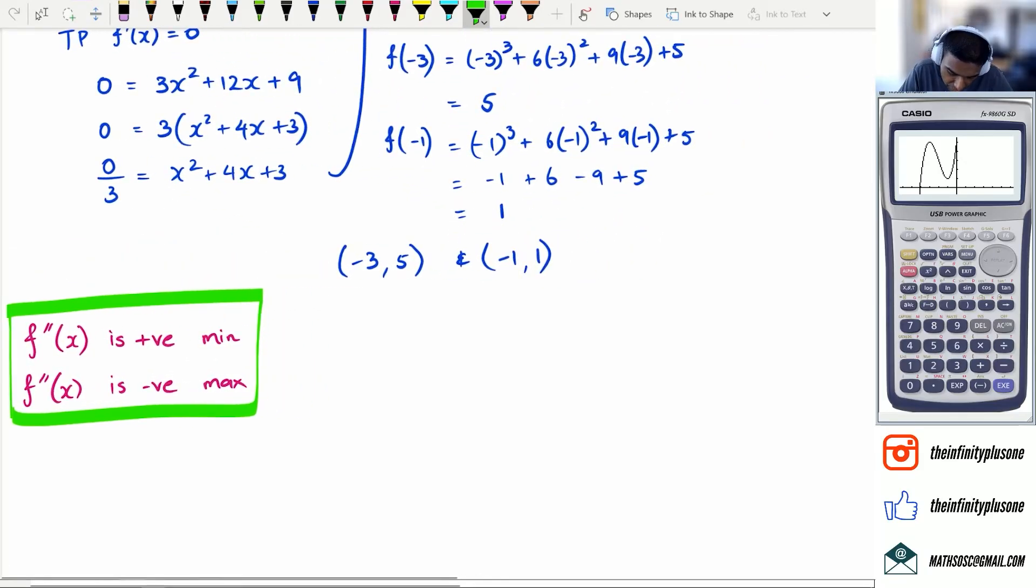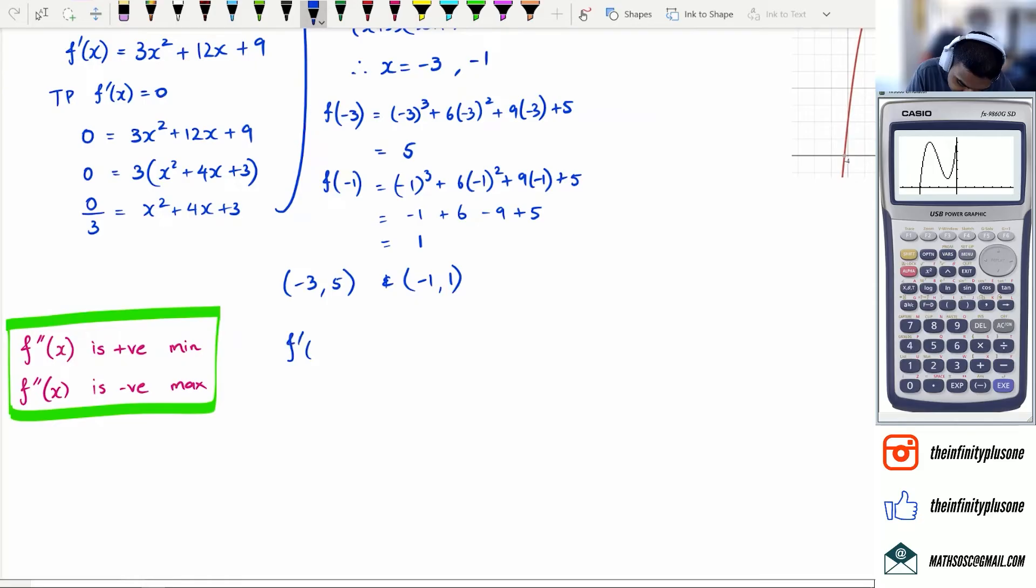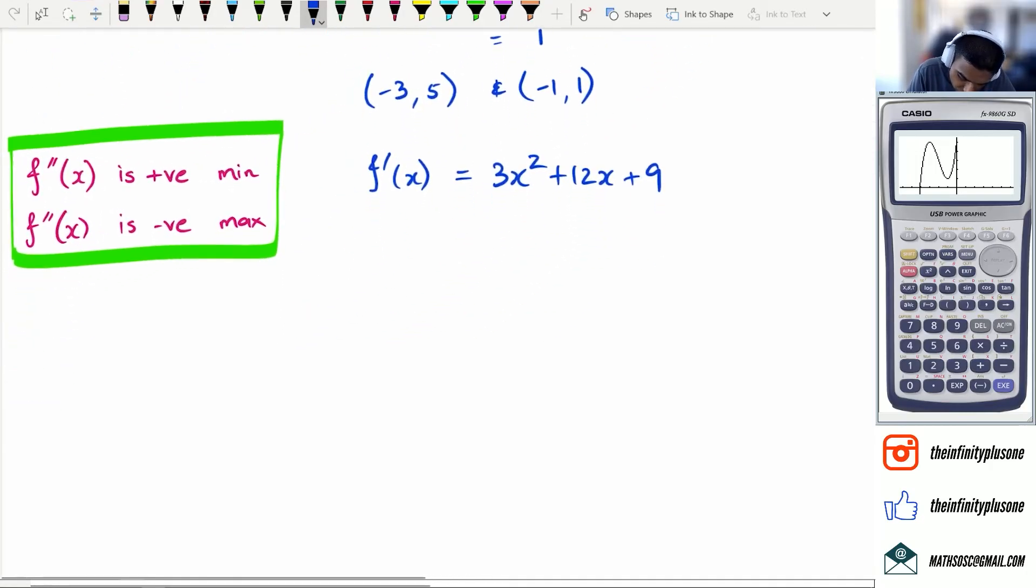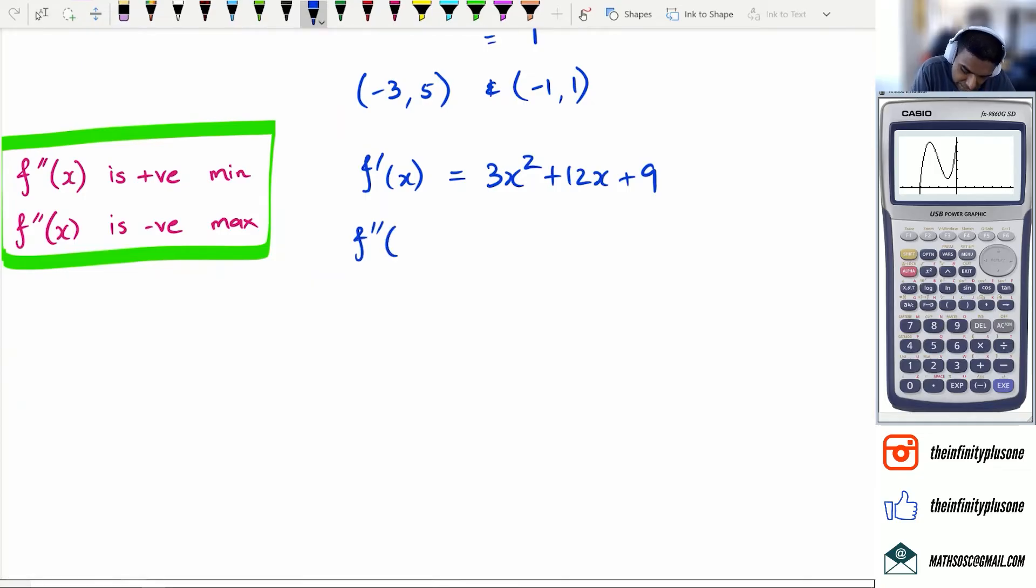So how do we figure out f''(x)? Well, we already know what f'(x) is. Now, f'(x) equals 3x squared plus 12x plus 9. So what we need to do is work out f''(x), which basically just means differentiate it a second time. So when we differentiate this a second time, we're going to end up with 6x plus 12. So at this point, all you have to do is substitute the x values of minus 3 and minus 1 into where this x is, and then look at the value, whether it's positive or negative.